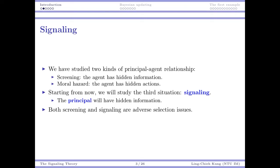There are different kinds of principal-agent problems. One of them is a screening problem, and another is the moral hazard problem. In both cases the principal is at some informational disadvantage because the agent has private information. For the screening problem the agent has hidden information; for the moral hazard problem the agent has hidden actions. These are the two types of problems we have studied.